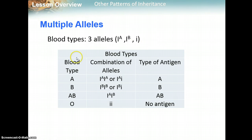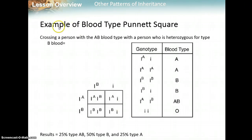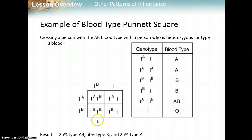When doing Punnett square genotypes for blood type, the I stands for immunoglobulin, meaning like an antibody. If you're type A, your genotype could be I^A I^A or I^A i. If you're type B, it's I^B I^B or I^B i. If you're AB, it's I^A I^B. And if you're O, you're just little i with no A or B antigen. In a cross of an AB person (I^A I^B) with a heterozygous B person (I^B i), there's a 25% chance of type AB, 50% chance of type B, and 25% chance of type A blood.